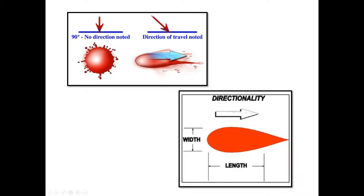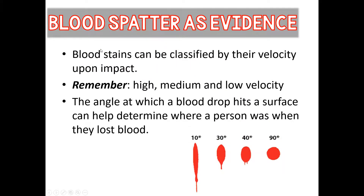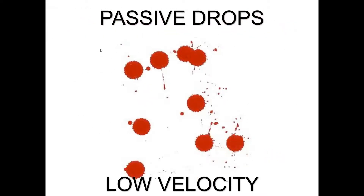With a passive stain, notice it is not a perfect circle. You will see spikes or spines that jut out from the initial blood stain — those are still attached to the original stain. Then you have satellites, which are independent of the stain but were still part of the original blood drop. Blood stains can also be classified by velocity: the speed the blood was traveling when it hit a surface. You can have high, medium, or low velocity spatter.